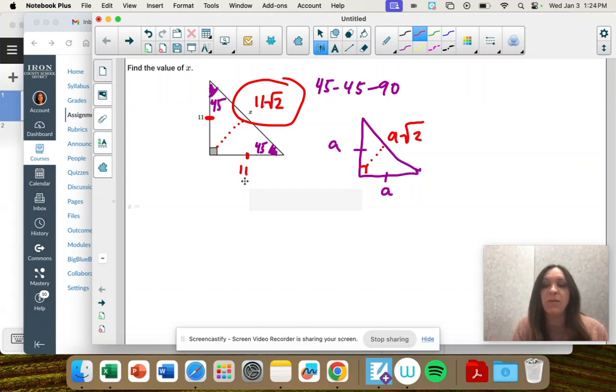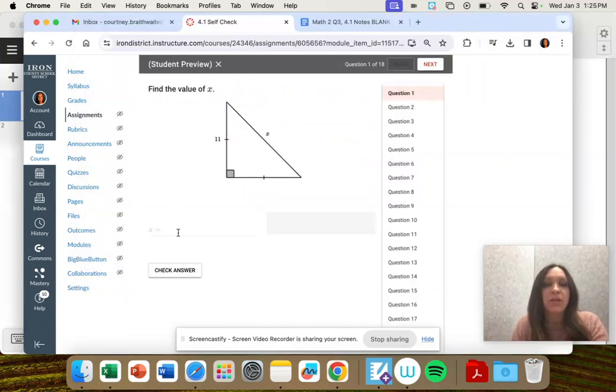That's how it always works out with those same angles, it's the same proportion. So 11 square root of 2.